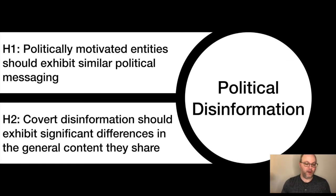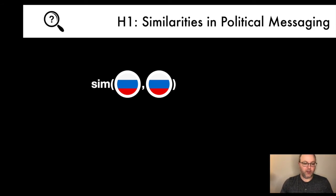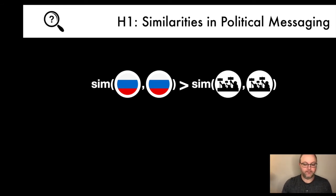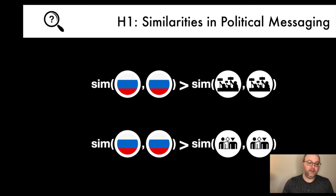Now that we've discussed how we operationalize similarity, we can talk about our expectations from these hypotheses. For Hypothesis 1, looking at similarities in political messaging, we expect IRA accounts to be much more similar to each other than a pair of politically engaged accounts — the idea being that IRA accounts are focused on a core set of political messages specific to their political goal, whereas general political accounts may discuss any number of political topics. We also expect IRA political messaging to be more similar than content from random accounts.